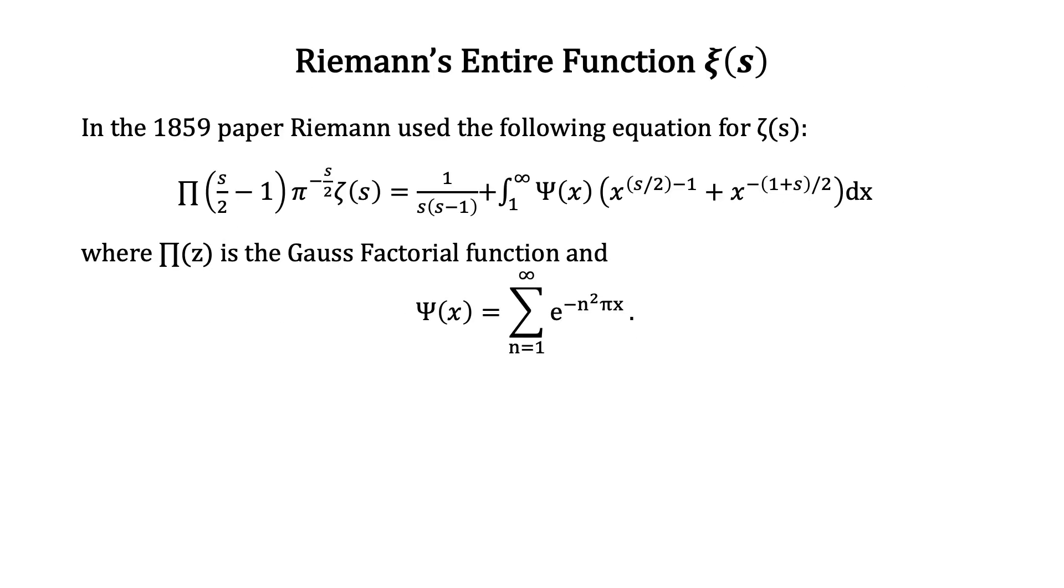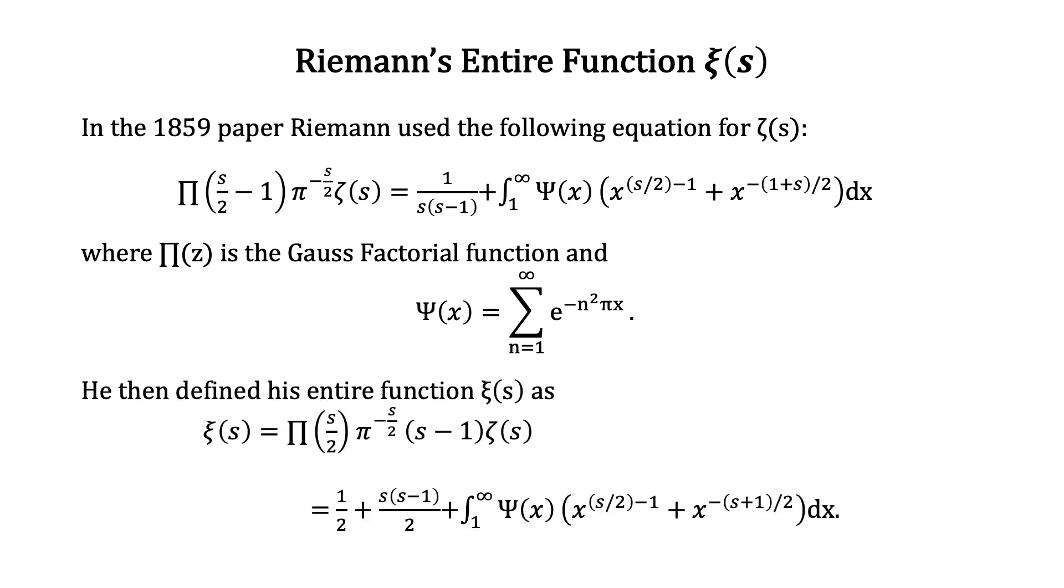Start the proof with Riemann's entire function ξ(s). In the 1859 paper, Riemann used the following for ζ(s). He then defined his entire function ψ(s) as the following.